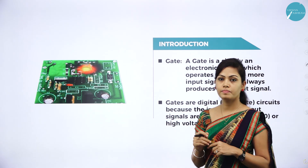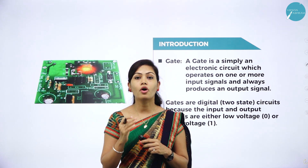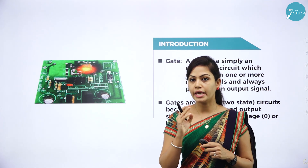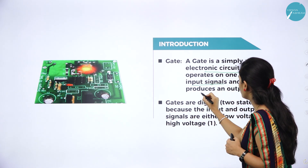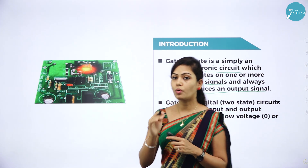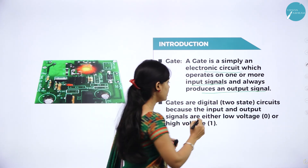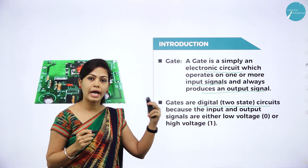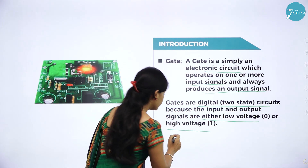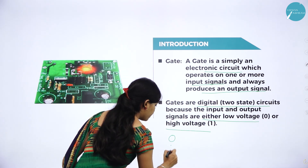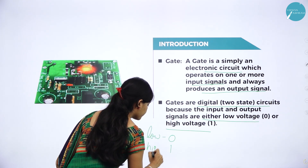A gate is an electronic circuit which operates on one or more input signals and always produces an output signal. Gates are digital circuits because the input and output signals are either low voltage or high voltage. Low voltage means we represent it as 0, and high voltage means we represent it as 1. Low voltage condition is 0; high voltage condition is 1.